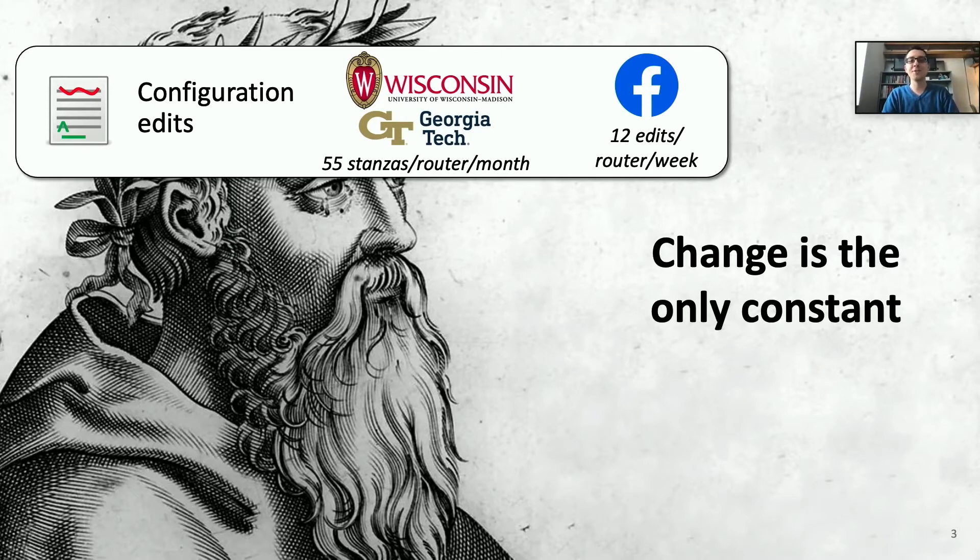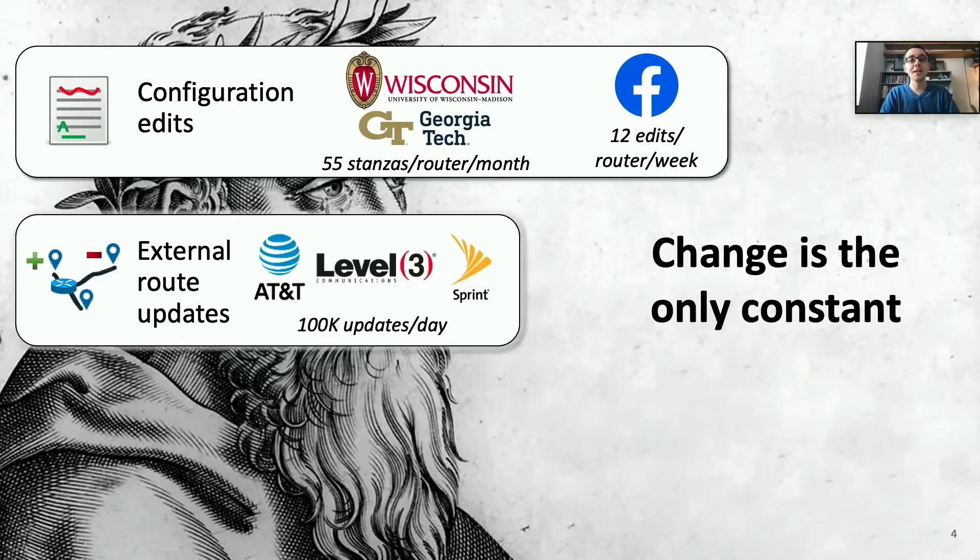For example, prior studies have shown that large universities edit tons of configuration stances in routers each month, and each week a dozen configuration edits are made to each device in Facebook's backbone network. On a daily basis, networks receive route updates from external peers. Studies have shown that Tier 1 ISPs receive a median of 100,000 route updates per day.